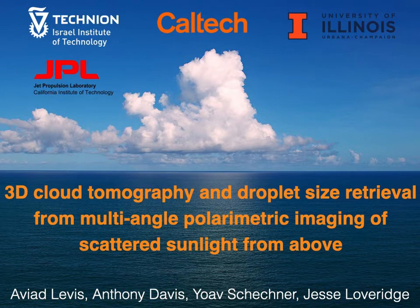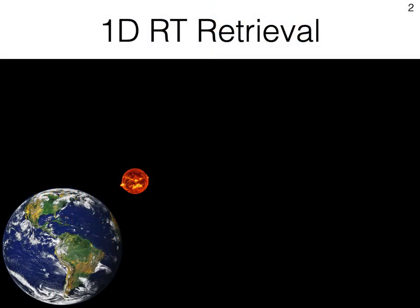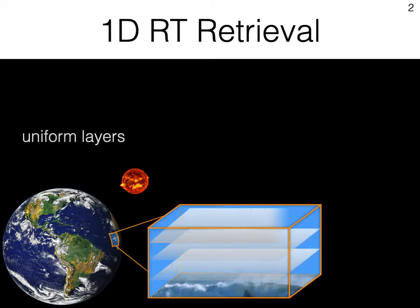In this work, we describe a novel approach for remote sensing of cloud properties in 3D using polarimetric measurements. Let's start by describing the current state of operational remote sensing. There, the atmosphere is assumed to be made of uniform layers, resulting in a 1D problem.